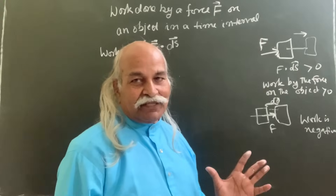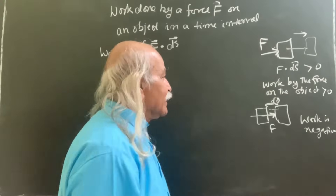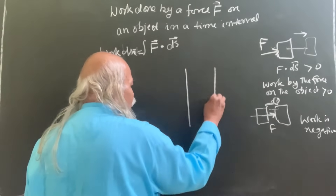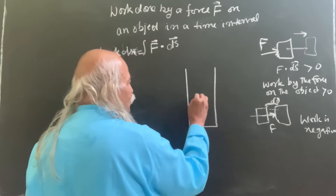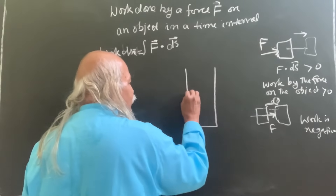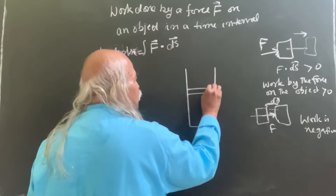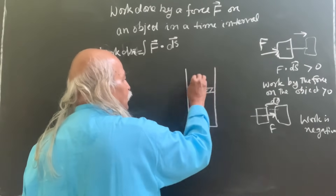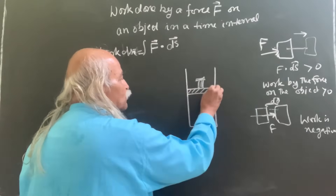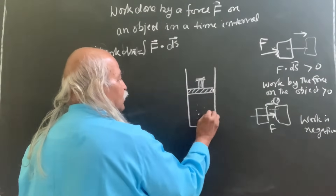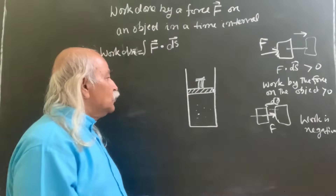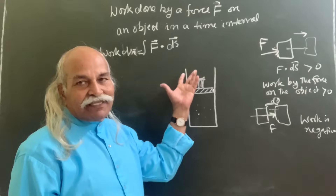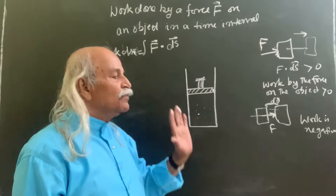Now come to thermodynamics. Here we are talking of a system. For example, you have a gas cylinder and a movable piston with no friction. This is the general example taken in intermediate schools. You can compress this gas or you can expand this gas — the piston can move in either direction.